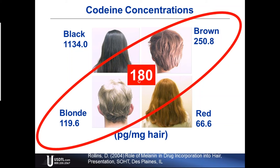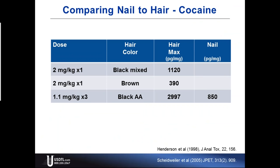Other studies by Henderson and another paper in JPET back in 2005 used similar doses of cocaine, finding black and mixed-race hair at 1,100 picograms, brown hair at 390. Another study with a slightly lower dose over three days for African Americans showed 2,997 picograms in hair and 850 in nail. This gives you a sense of where you can expect nail results to fall relative to hair and hair color.